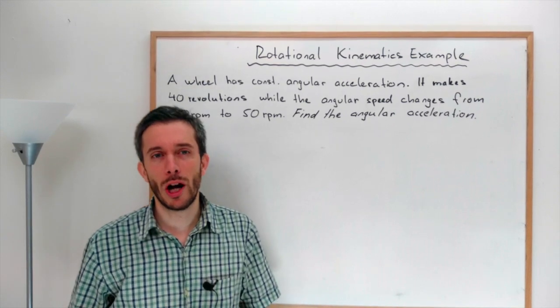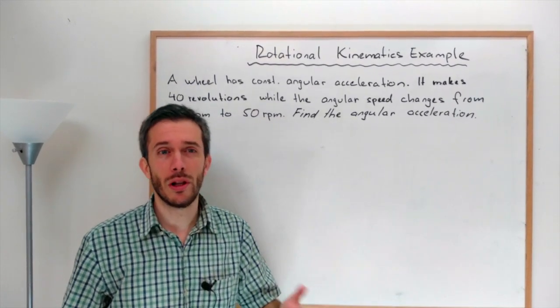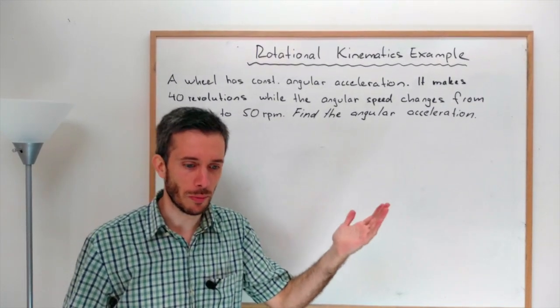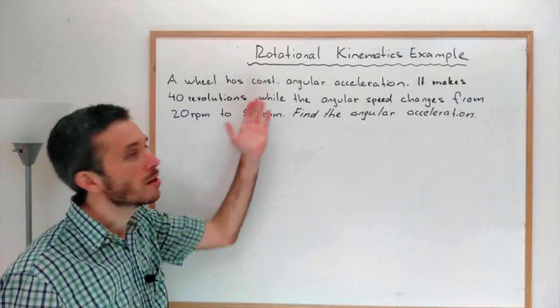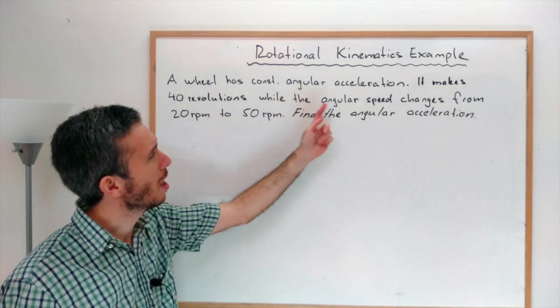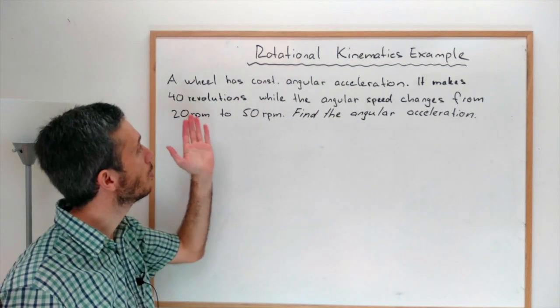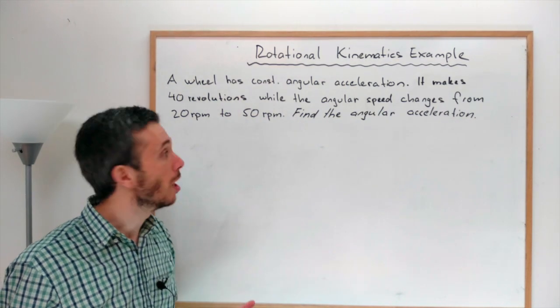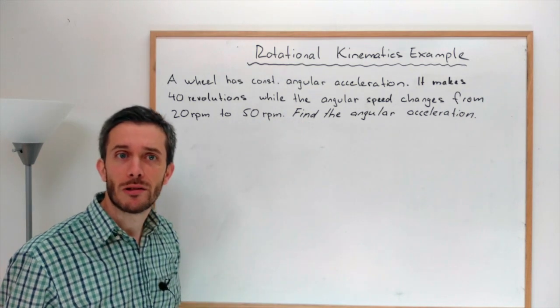In this video I want to show you how to solve a simple rotational kinematics problem. A wheel has a constant angular acceleration. It makes 40 revolutions while the angular speed changes from 20 rpm to 50 rpm. Find the angular acceleration.